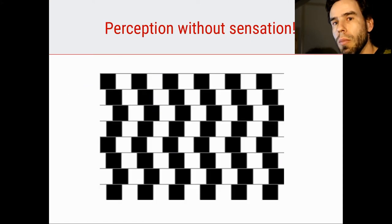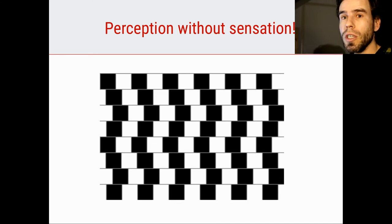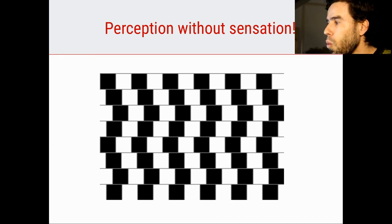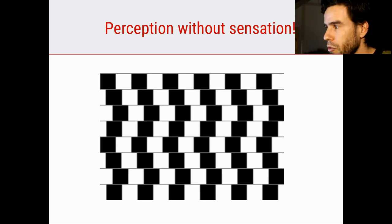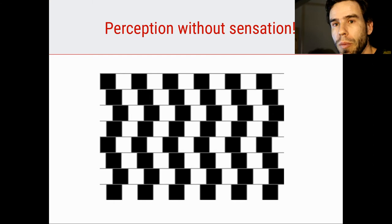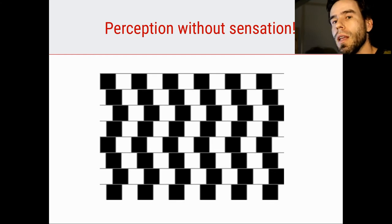Consider, for example, this optical illusion right here, which is called the café wall illusion. What you perceive is a wall with lines that are slightly tilted — they don't seem to be perfectly straight. Due to the way that this visual information is configured, we perceive the lines as being slightly slanted. Whereas, of course, the lines are — if you would measure them with a ruler — perfectly parallel. So what we sense are perfectly parallel lines, but what we perceive are slightly slanted lines. This is a disconnect between perception and sensation.